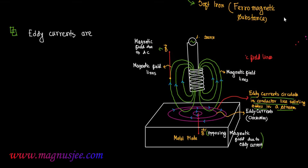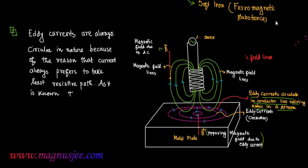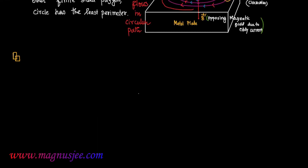Eddy currents are always circular in shape or nature, because current always prefers to take the least resistive path. As it is known that for the same area, a circle and any other finite-sided polygon — the circle has the least perimeter.